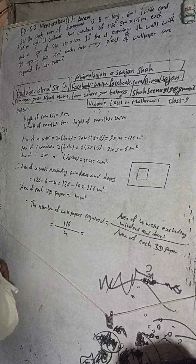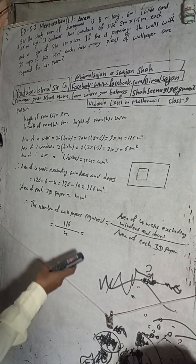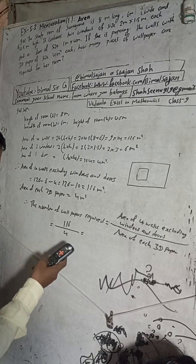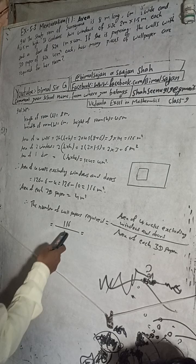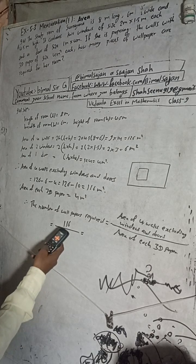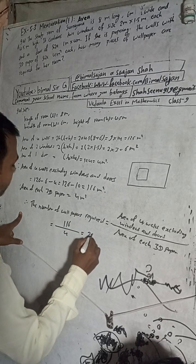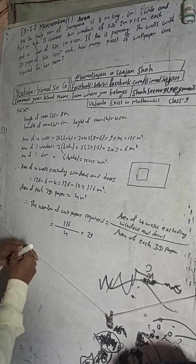116 divided by 4, which equals 29. So the answer is 29.